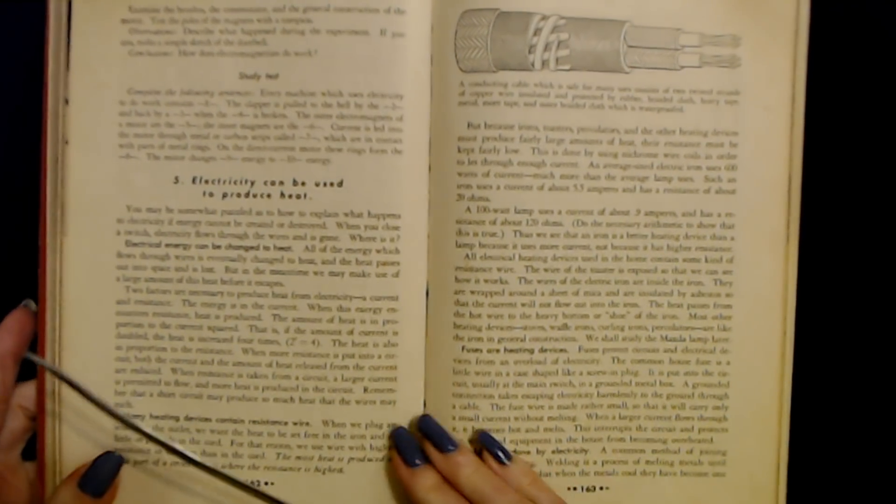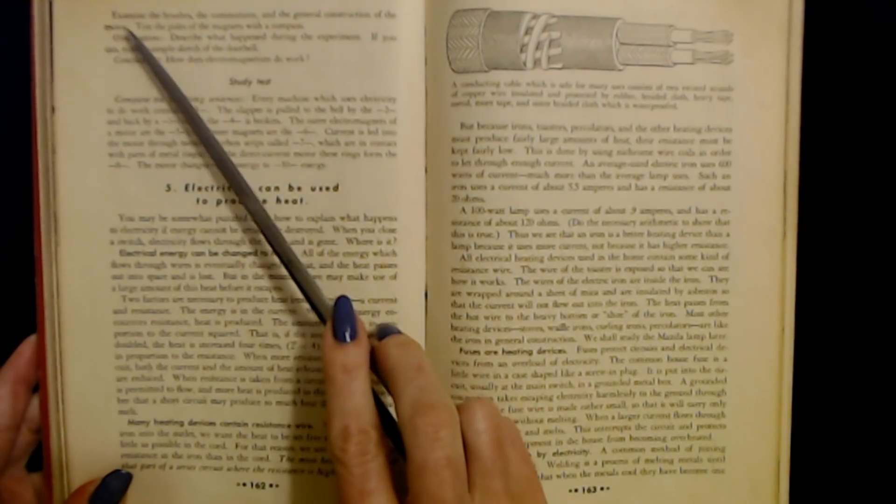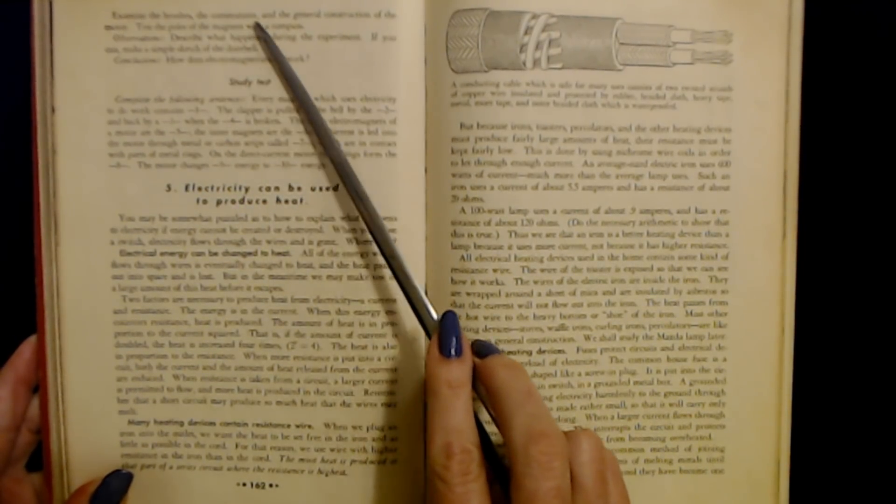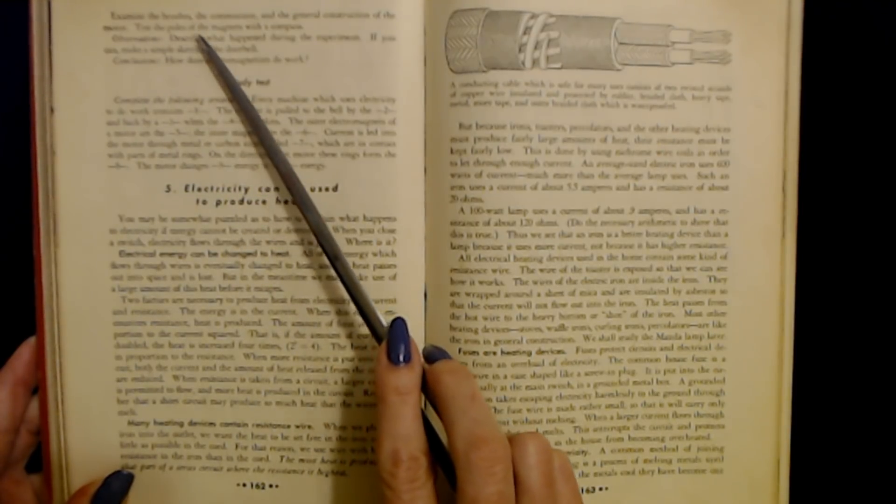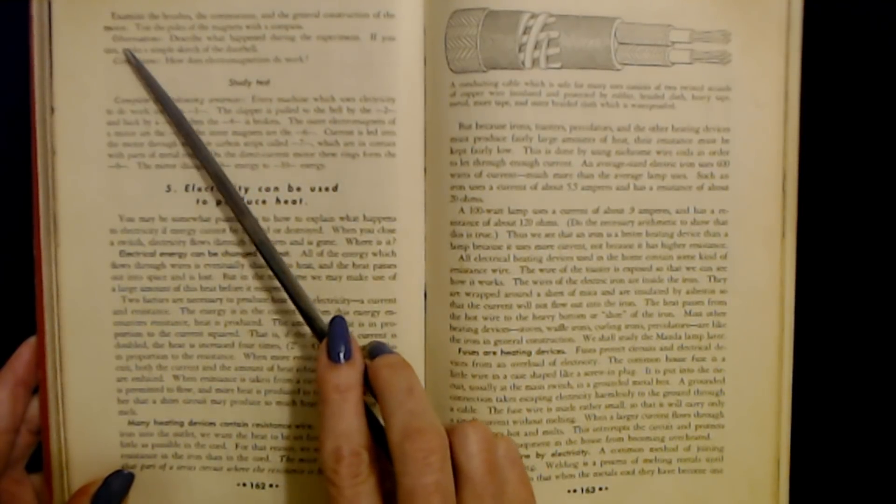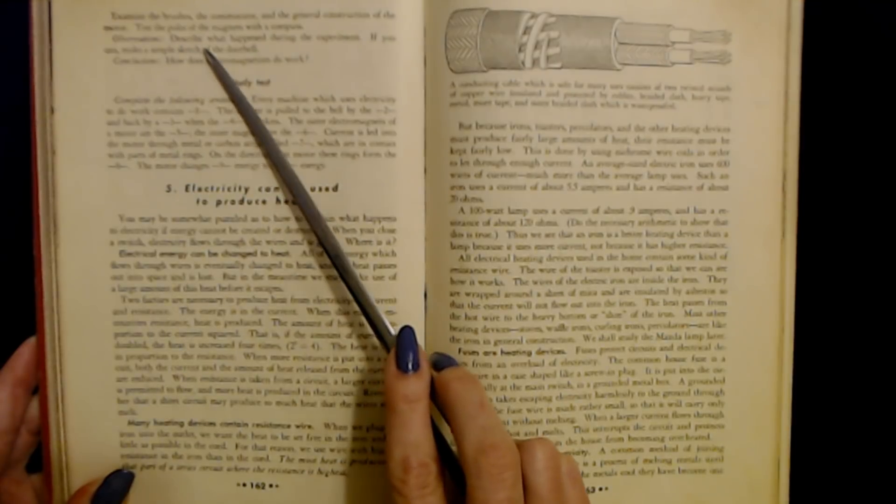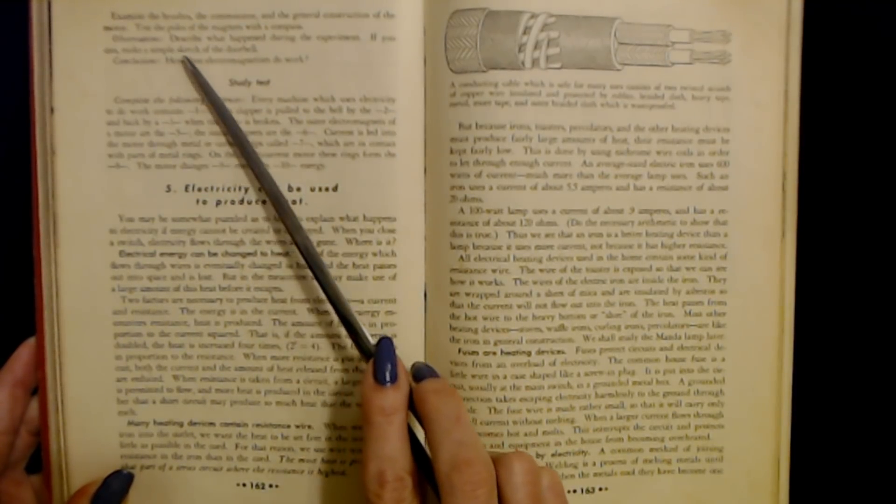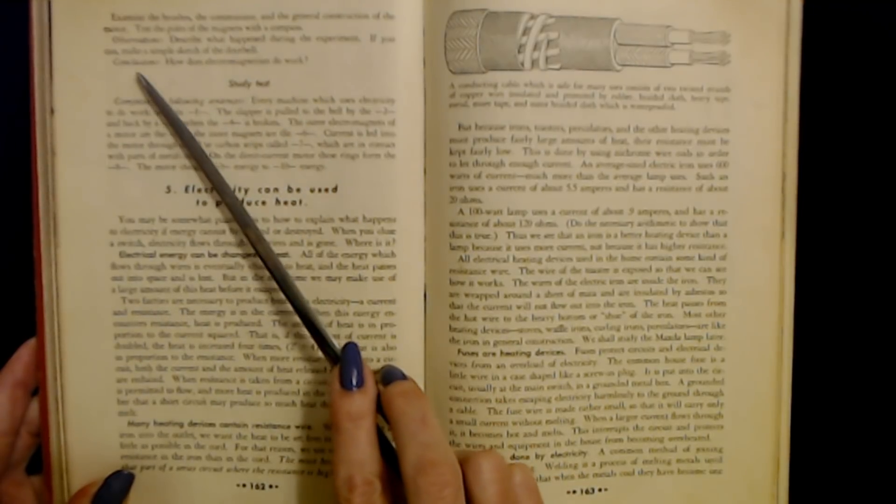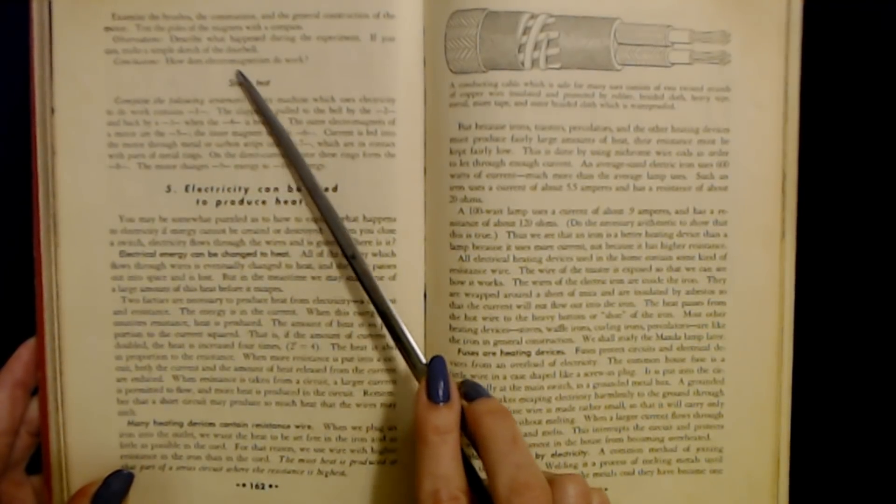Okay, here's another part of your little test. Examine the brushes, the commutator, and the general construction of the motor. Test the poles of the magnets with the compass. Observations: Describe what happened during the experiment. If you can, make a simple sketch of the doorbell. Conclusions: How does electromagnetism work?